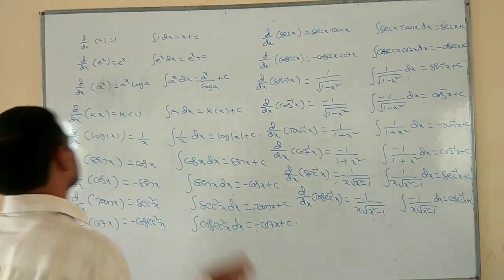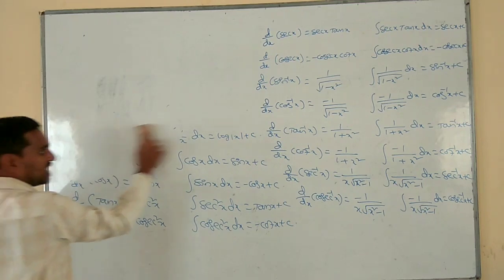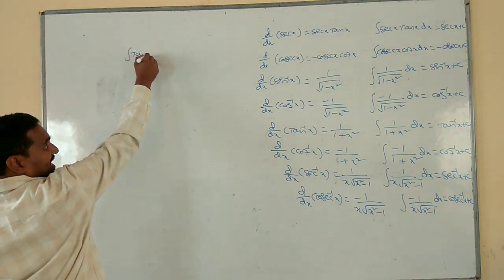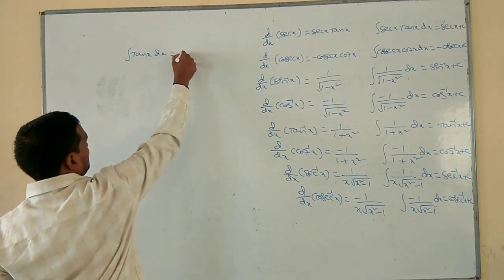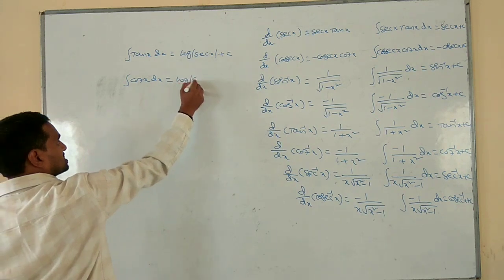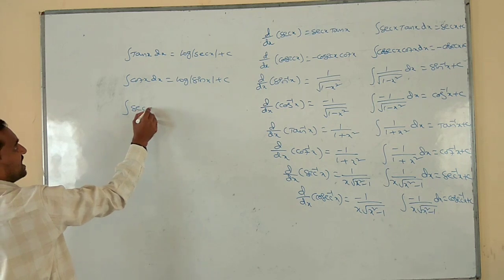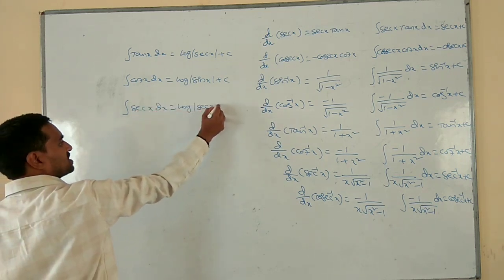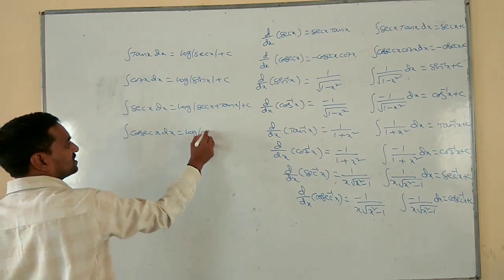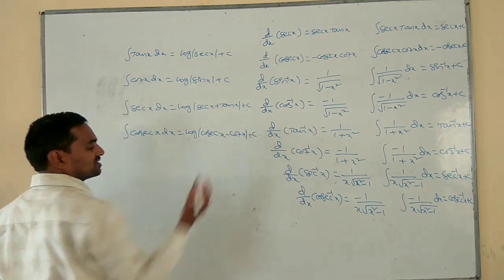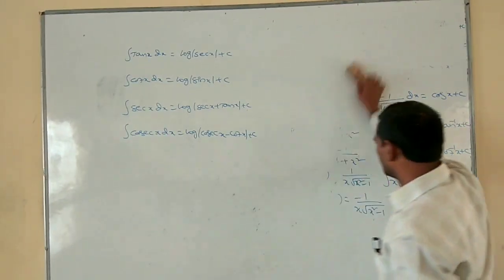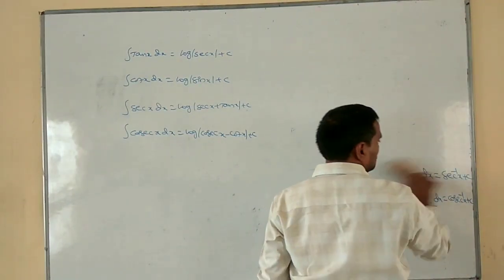Another set of integration formulas. By substitution method we have proved already: integration of tan x dx is log modulus of secant x plus c. Integration of cot x dx is log modulus of sin x plus c. Integration of secant x dx is log modulus of secant x plus tan x plus c. Integration of cosecant x dx is log modulus of secant x minus cot x plus c. These are all our integration and differentiation formulas — at least read and write these formulas one time.